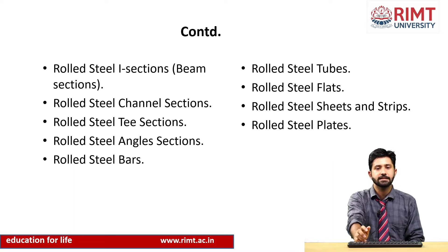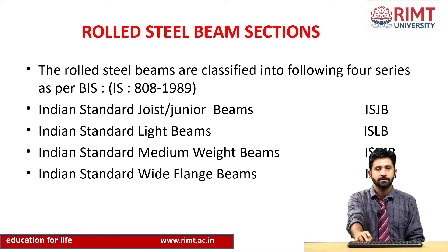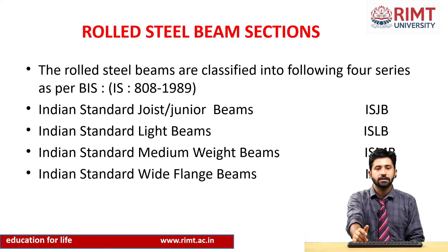The rolled steel channel section has a shape like the English alphabet C. Rolled steel T sections have a shape like the alphabet T. Rolled steel beam sections are I sections, also known as girders. We have mainly four types of beam sections: ISJB (Indian Standard Junior beams), ISLB (Indian Standard Light beams), ISMB (Indian Standard Medium weight beams), and ISWB (Indian Standard Wide flange beams). This classification is done according to the weight of the section.